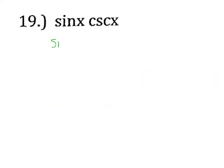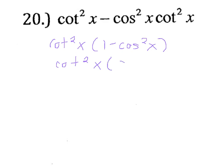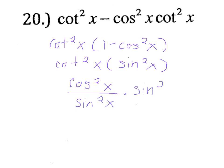For number 19, cosecant is the same as 1 over sine x, so the expression equals 1. For number 20, we factor out cotangent squared x since there are two of them. We remember from our identities that 1 minus cosine squared x equals sine squared x. And cotangent squared x is cosine squared x over sine squared x. Multiplying that by sine squared x gives cosine squared x.